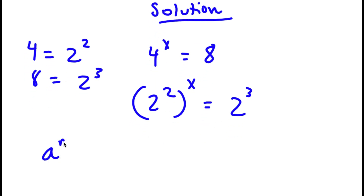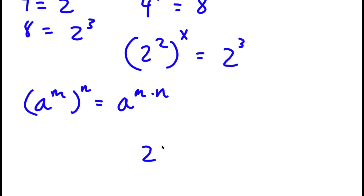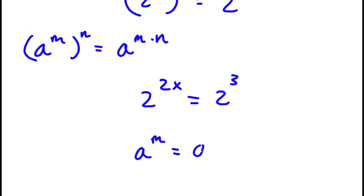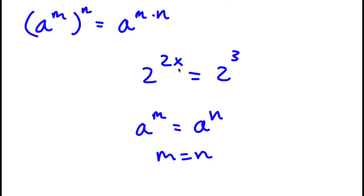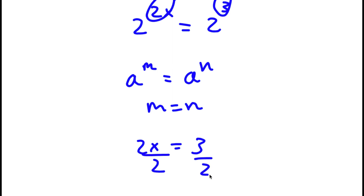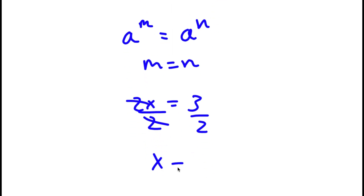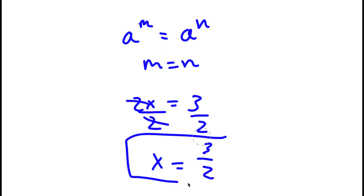Now, if I have something in the form a to the power of m to the power of n, this is simply equal to a to the power of m times n. So 2 to the power of 2 to the power of x equals 2 to the power of 2x, which is equal to 2 to the power of 3. If a to the power of m equals a to the power of n, then m equals n. So in this case, 2x is equal to 3. Dividing both sides by 2, x is equal to 3 over 2. So this is my answer.